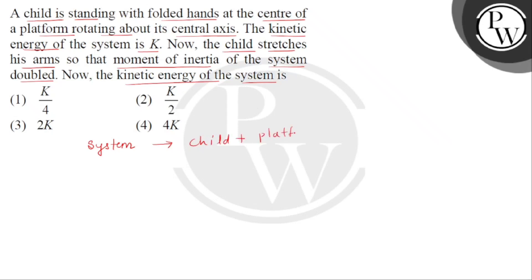A platform which is rotated about its central axis. So let's understand that this is the circular platform, center of the platform and this is rotating about an axis passing through the center and perpendicular to the plane. So this is our central axis.